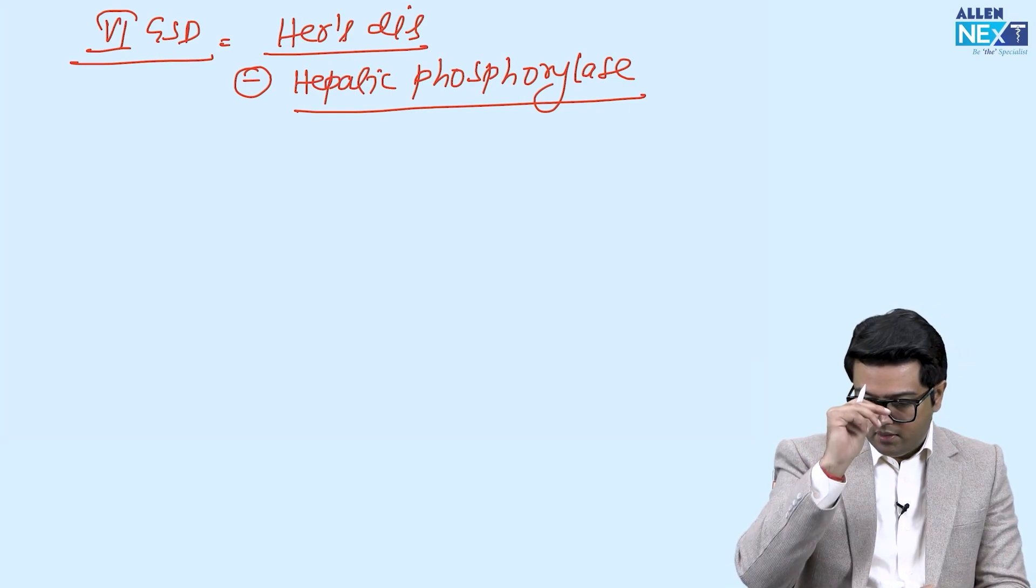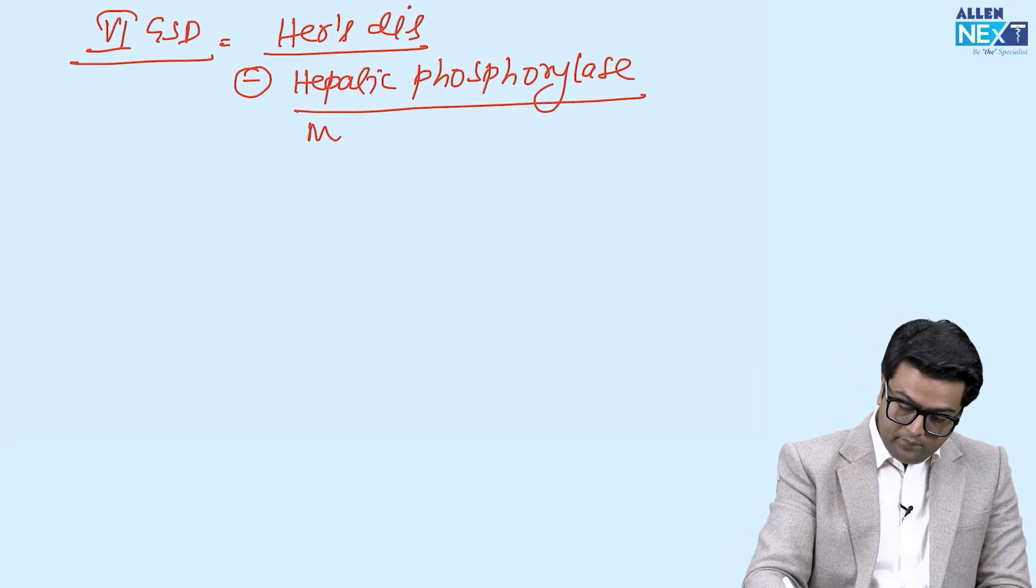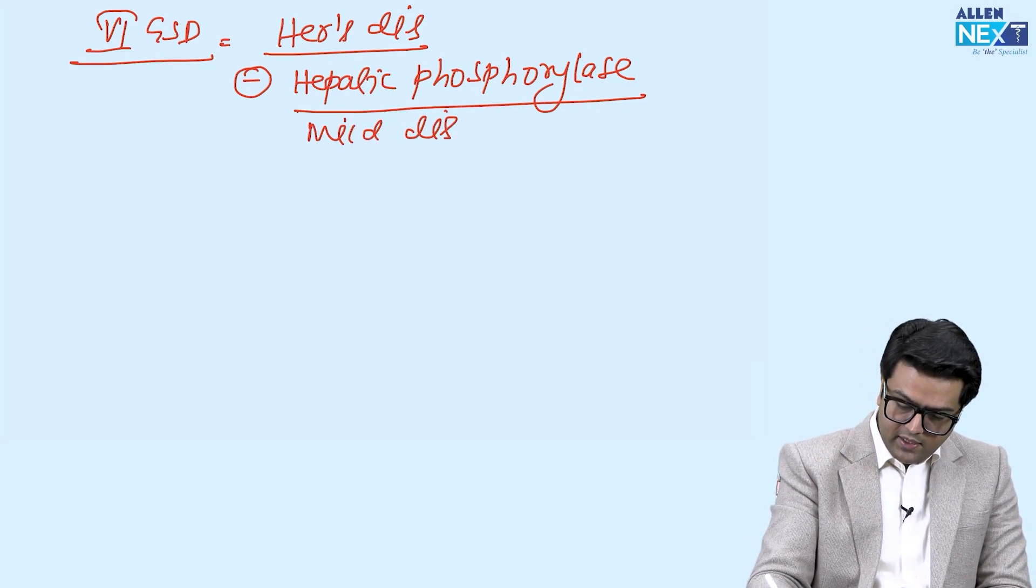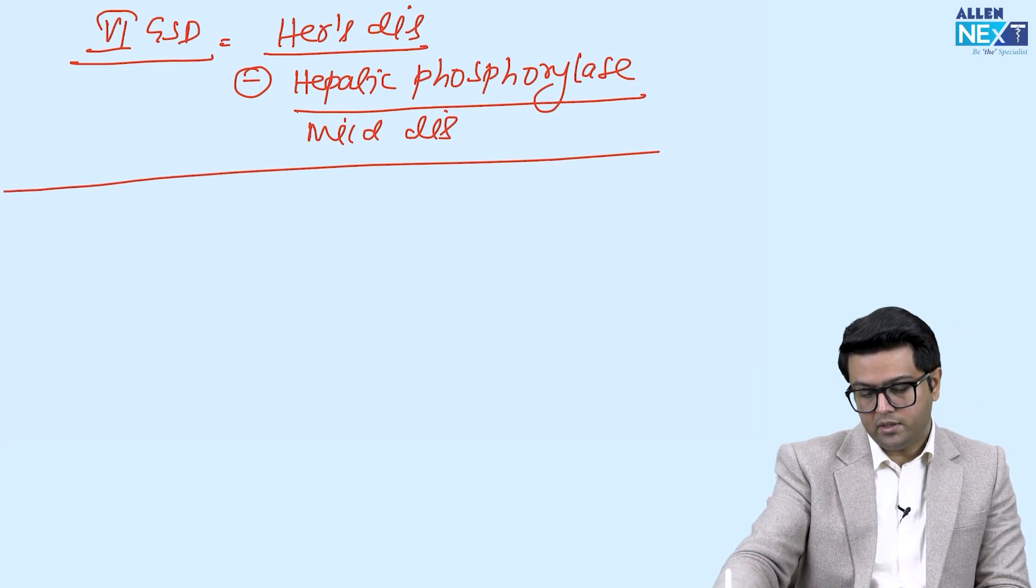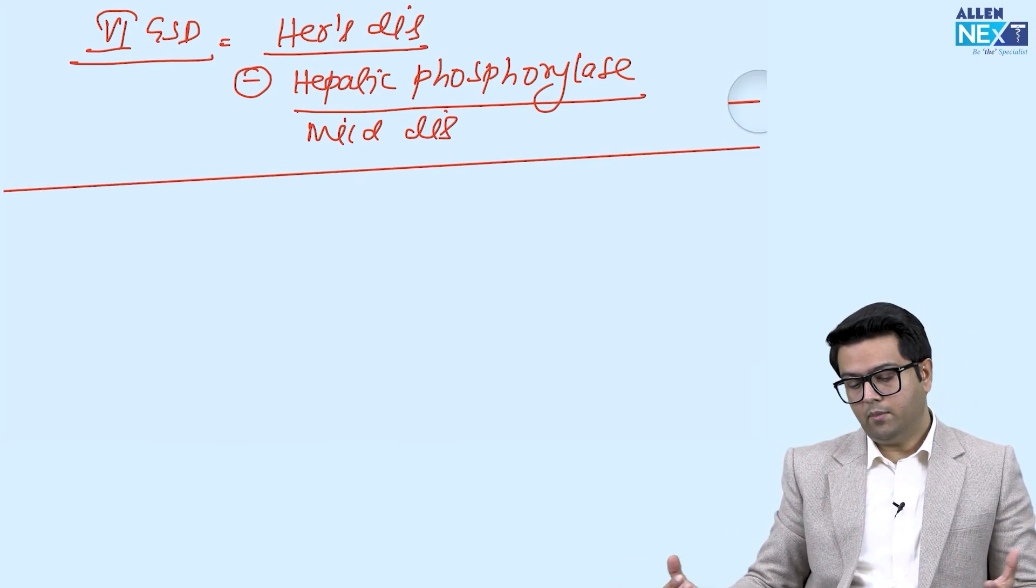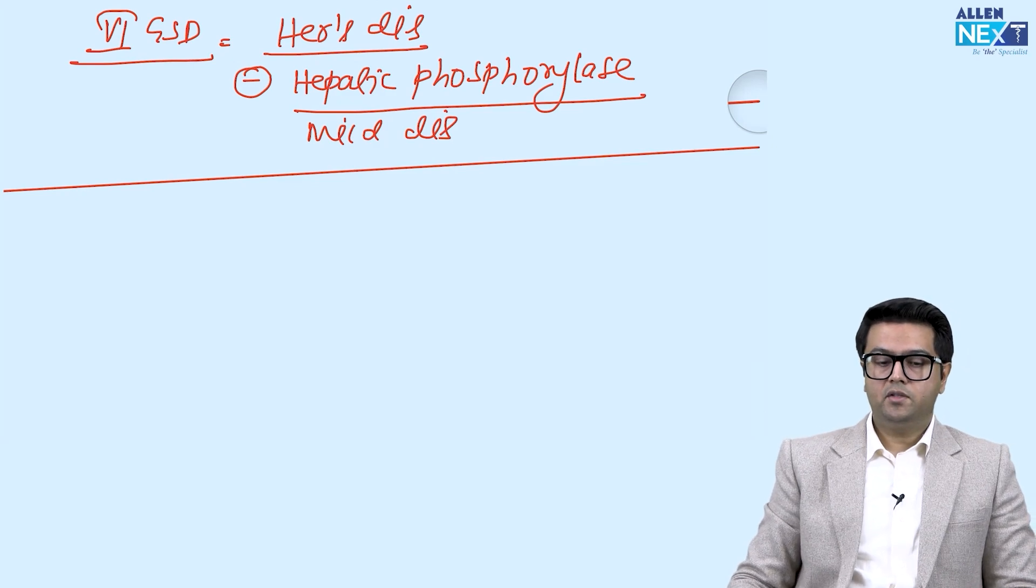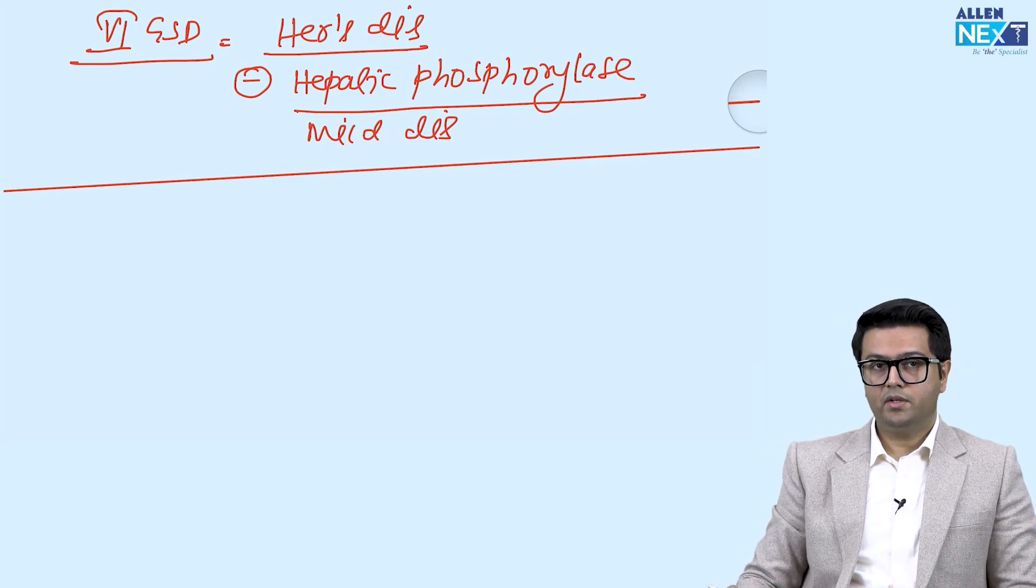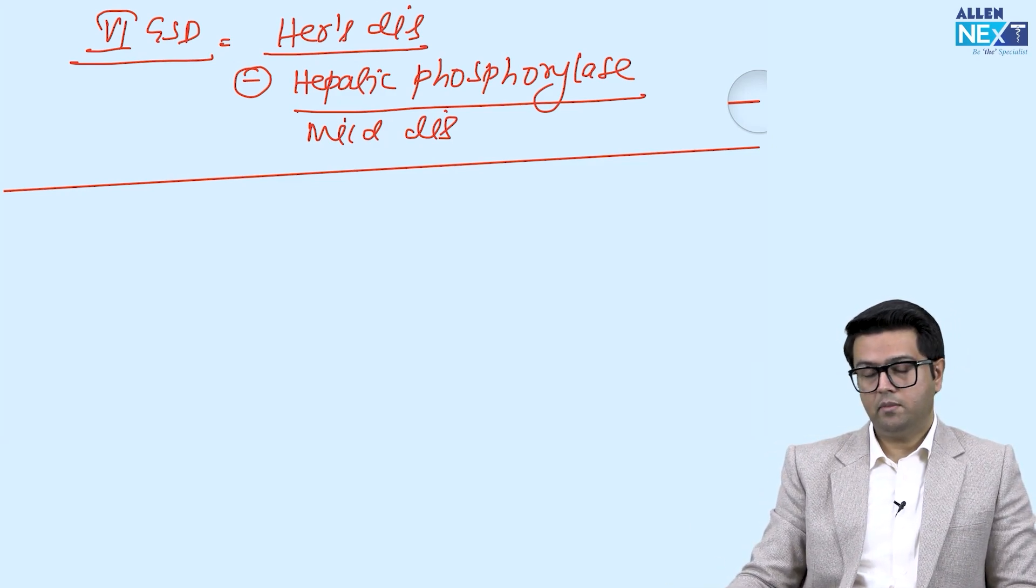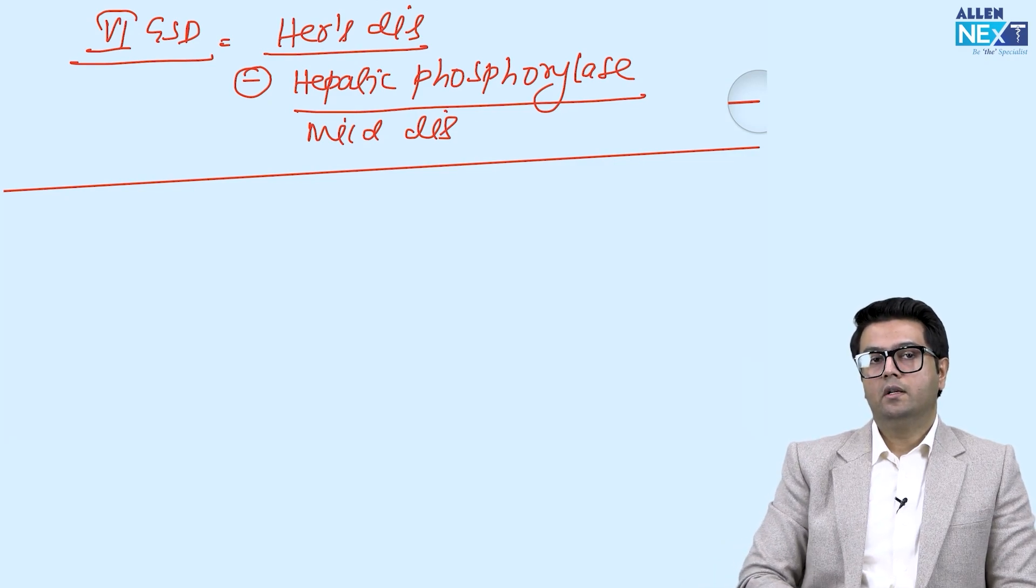Hepatic phosphorylase deficiency - that is a mild disease and that is why there is no MCQ till now on this point. Just you remember the name and the name of enzyme. These are the six or seven disorders that I told you which are important for the MCQ purpose.